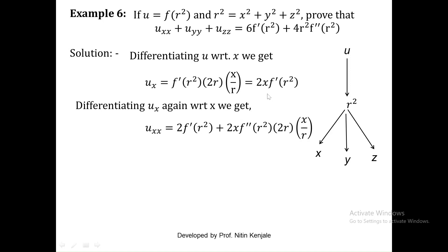Now we differentiate ux one more time with respect to x to get uxx, using the product rule. We take 2x as u and f dash of r square as v. The derivative of 2x is 2, times f dash of r square as it is, plus 2x as it is times f double dash of r square into the chain rule derivative of r square, which is 2r, into derivative of r with respect to x, which is x by r. This r cancels, and 2 times 2 gives 4, x times x gives x square. So uxx equals 2 f dash of r square plus 4x square f double dash of r square.